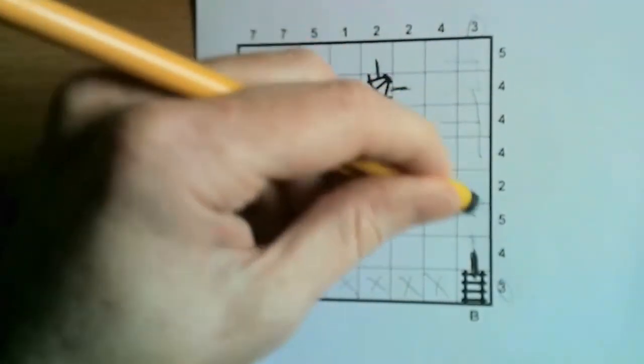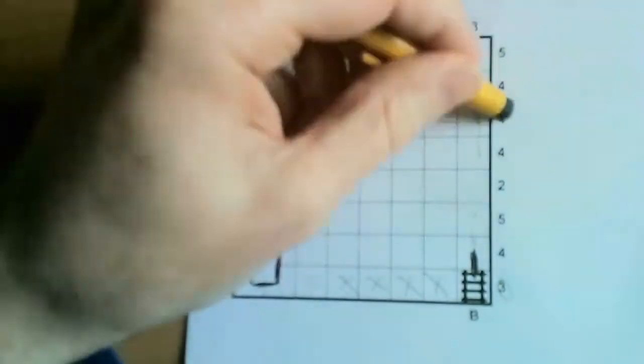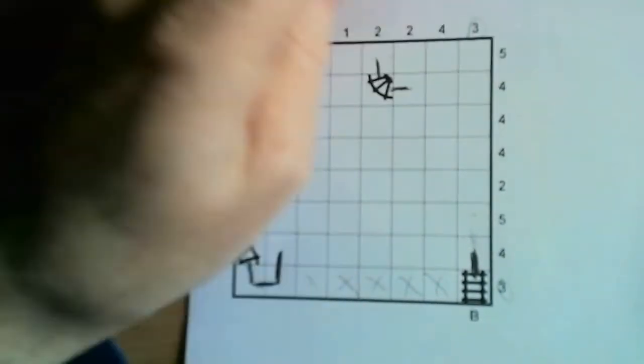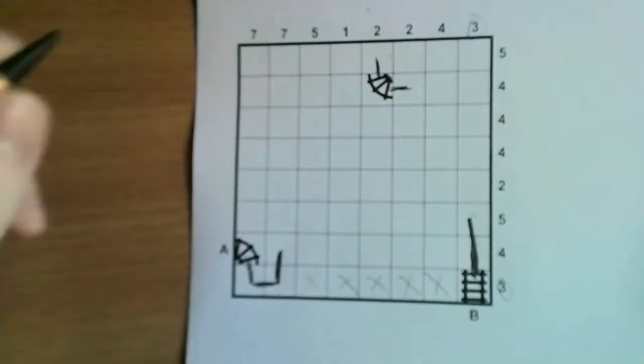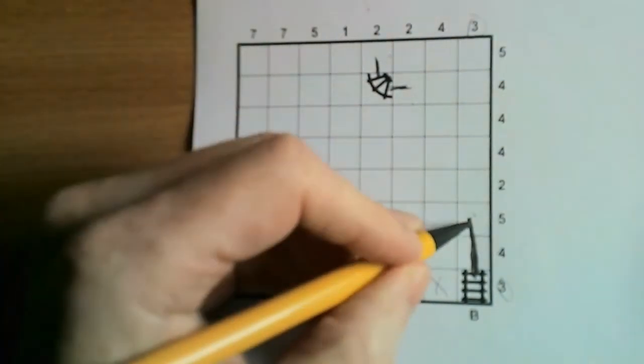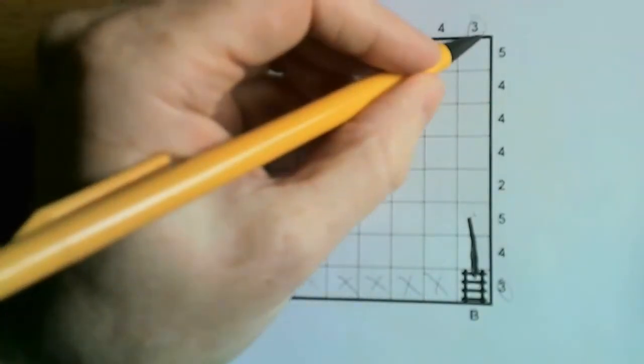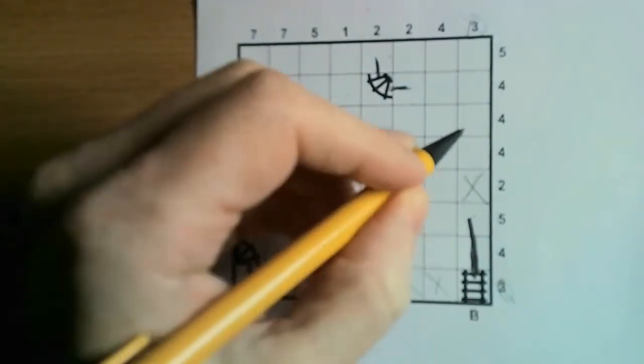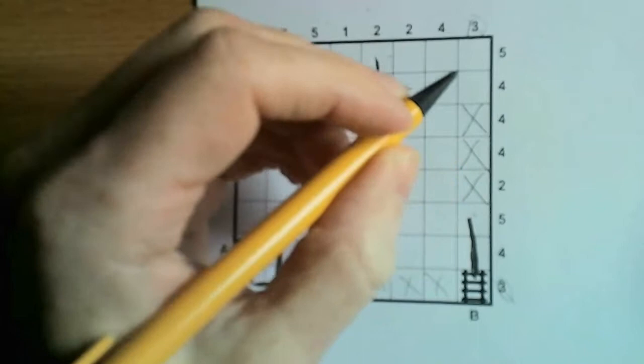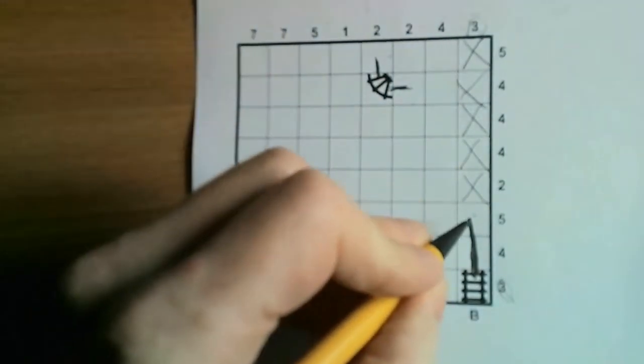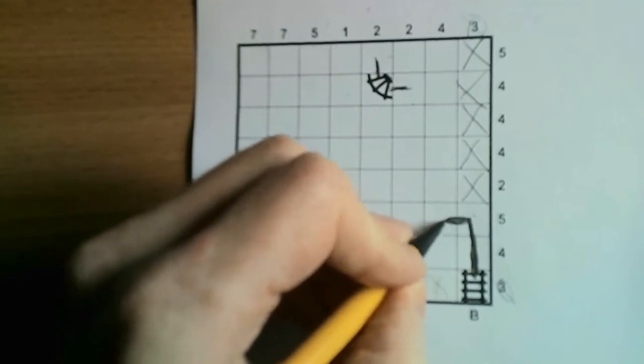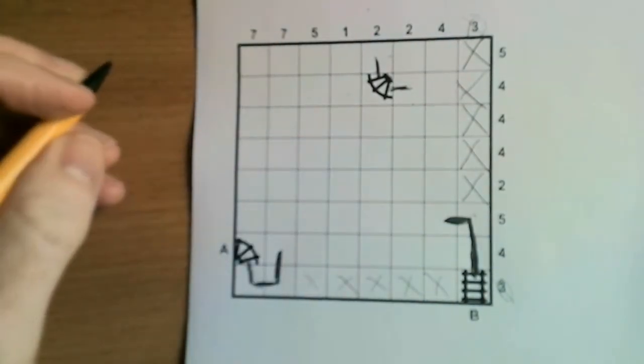So what that means is that actually the only option is for the track to come straight up like that. That's the only way that that three can be valid. So we can cross those off and we can pull the track across here.